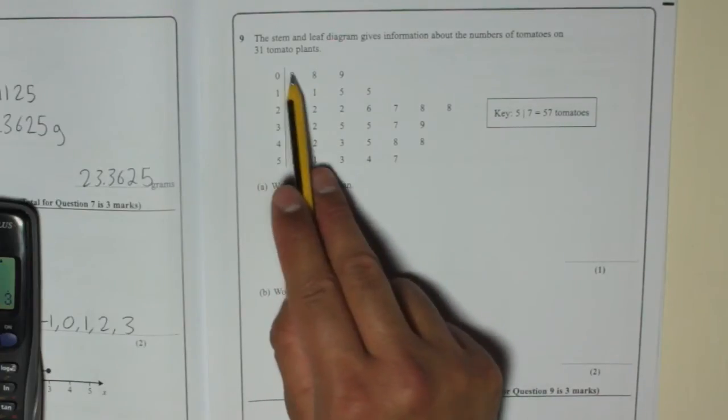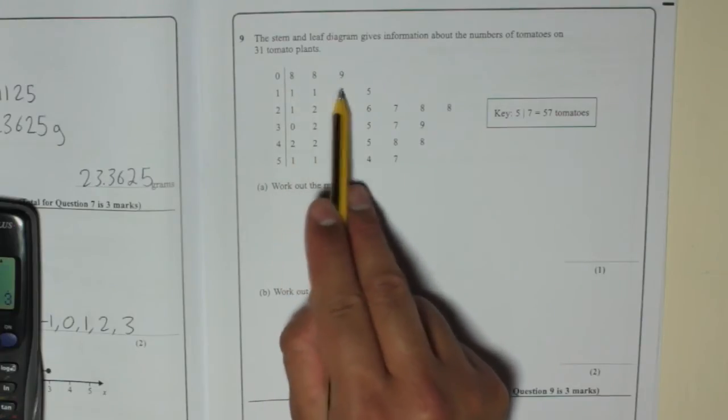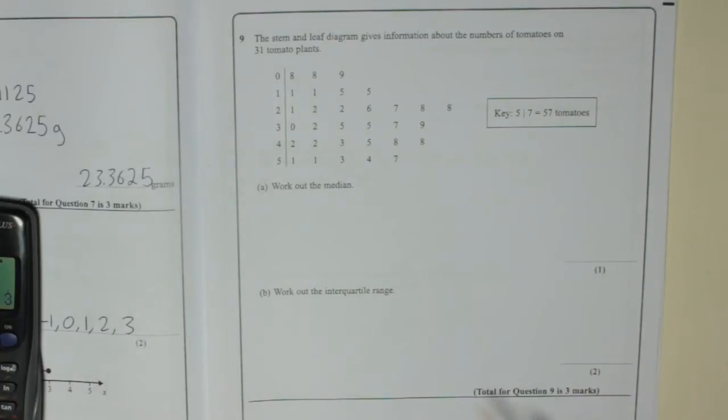So no tens, 8 units. That means 8, 8, 9, 11, 11, 15, 15, 21, 22, 22 and so on. So, part A, work out the median.